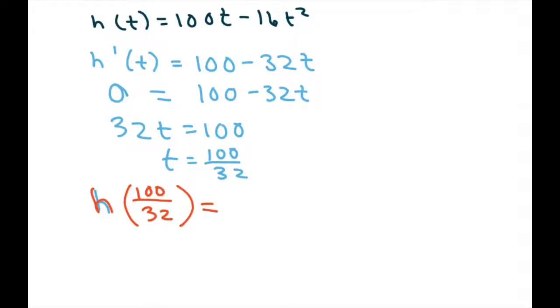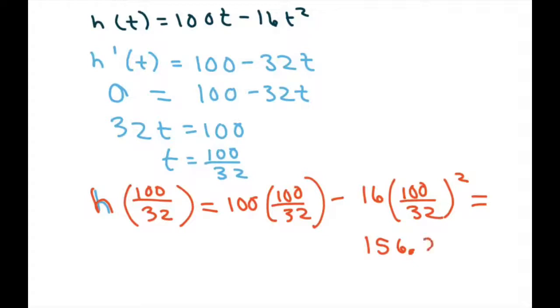This equals 100 times 100/32 minus 16 times (100/32)², which is going to equal 156.250, or remember to round to three decimal places.